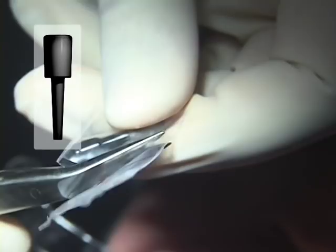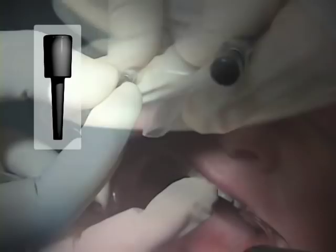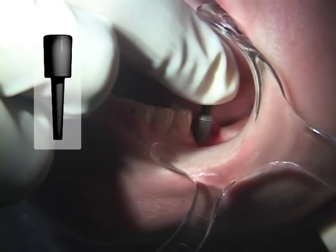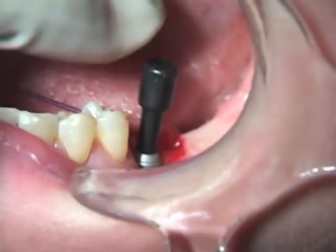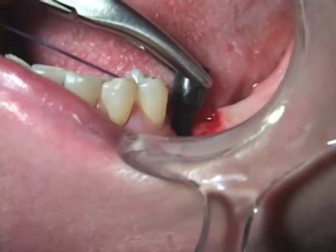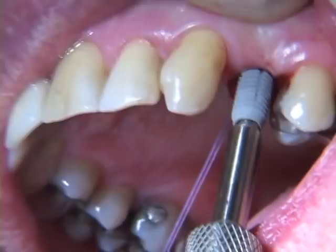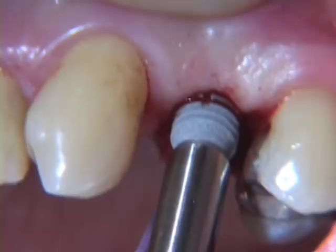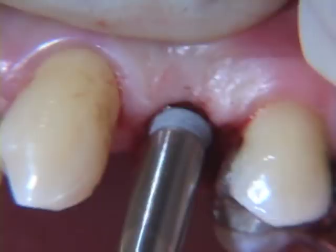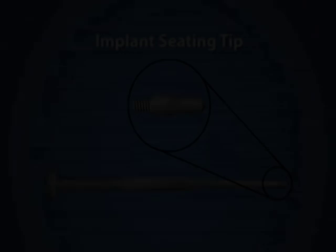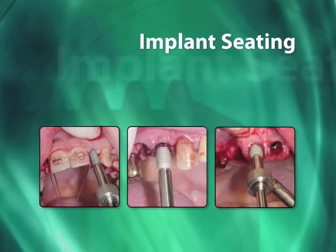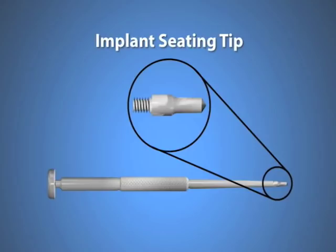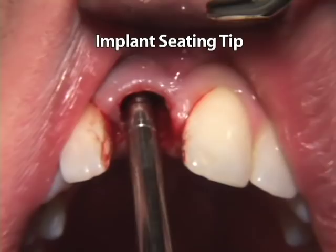All implants are packaged with the healing plug inserter attached. Grasp the healing plug inserter with gloved fingers or forceps and insert the implant into the prepared socket. The implant should not touch anything prior to being placed into the bleeding prepared socket. The socket is not flushed because it is desirable to have an undiluted blood clot form within the implant placement site. Rotating the assembly while pressing apically during seating will help to fully seat the implant. The implant should be wet with blood during seating.